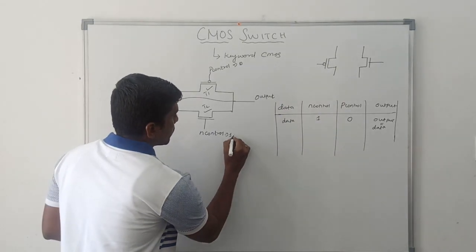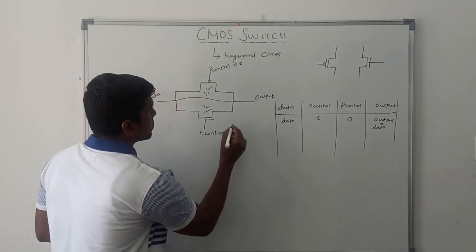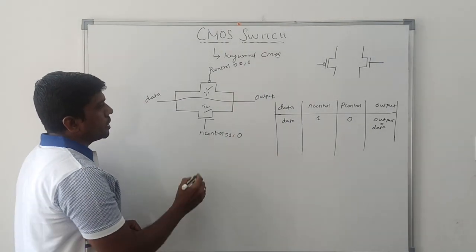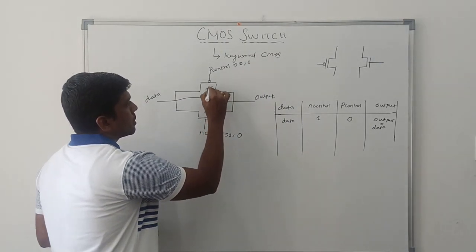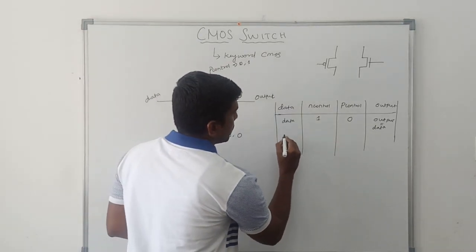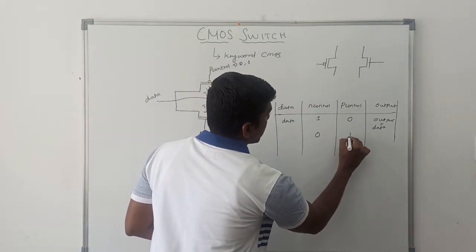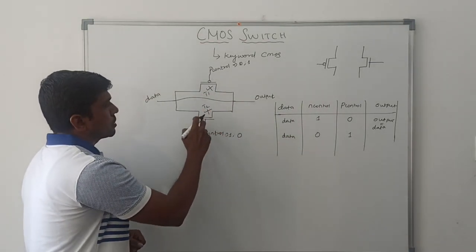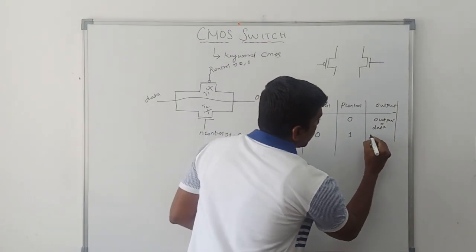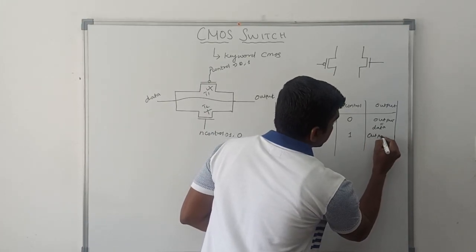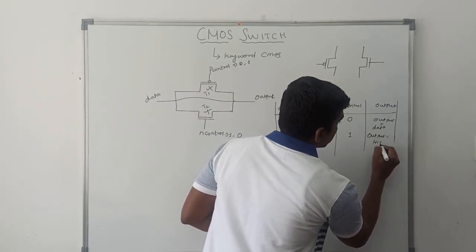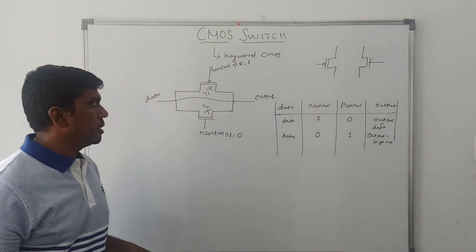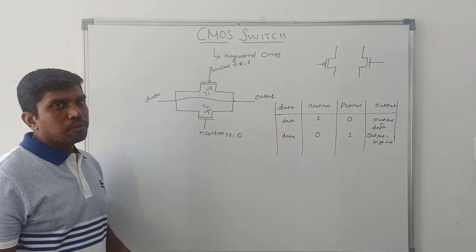Second case: if N control signal goes to 0, P control signal goes to 1. In this case, these two transistors are turned off. N control signal is 0, P control signal is 1. In this case, these two transistors are turned off. Output equals high impedance. High impedance state. It is the operations of CMOS switch.